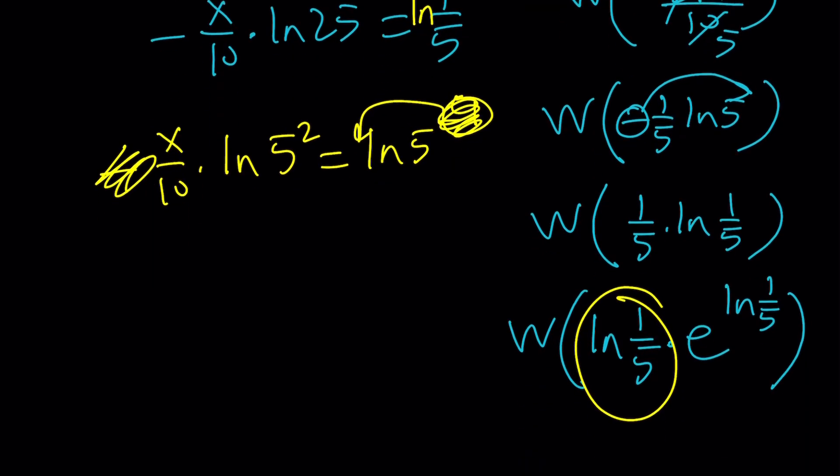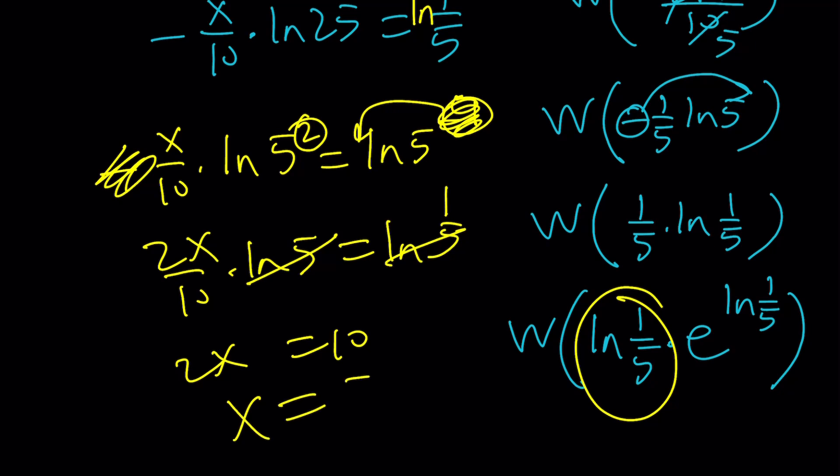And then, I can kind of write this as ln 5 squared. And this is ln 5 to the power of negative 1. This negative 1 will move to the front and cancel out with this. And then, I'm going to end up with a 2 here. So, 2x over 10 ln 5 equals ln 5. ln 5 cancels out, leaving us with 1. 2x equals 10. And yay! x equals 5 from here.